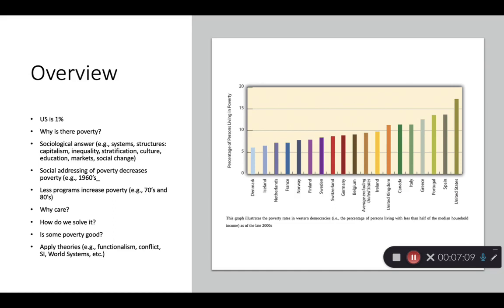A really good question is: is some poverty good? Why should a doctor make more money than someone who works in a restaurant? Is some inequality between groups good to incentivize and motivate people? But at what point is society so inequitable that the person working in a restaurant can barely eat that week while the person with higher socioeconomic status is dominating the markets? We're going to look at this from several different angles by applying the theories.